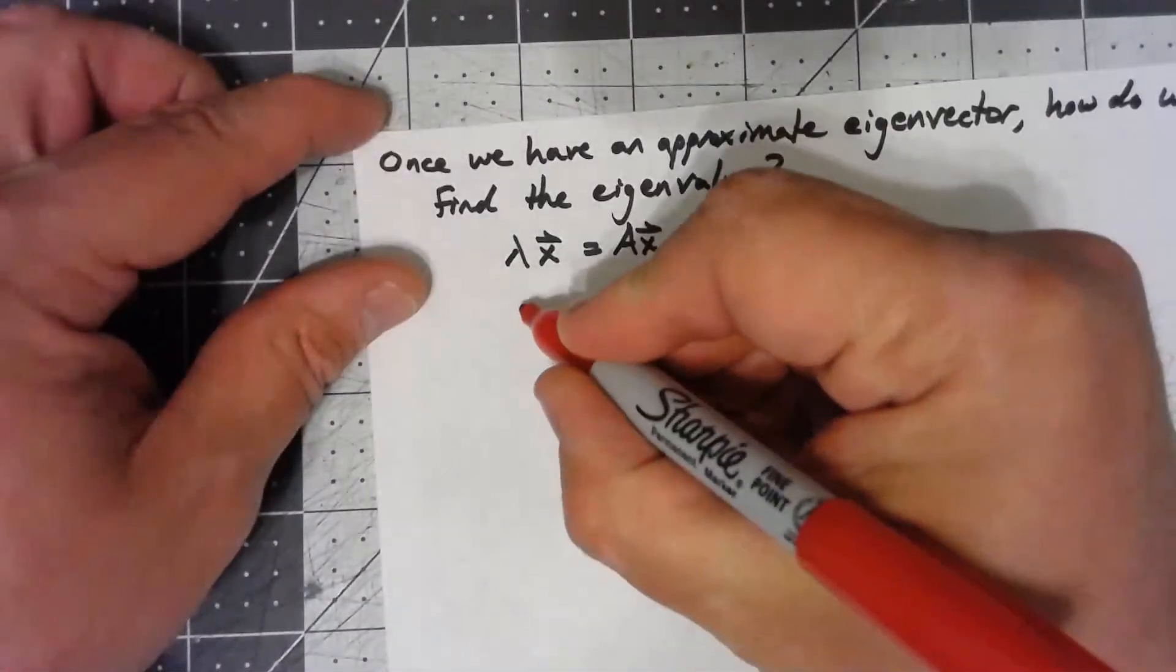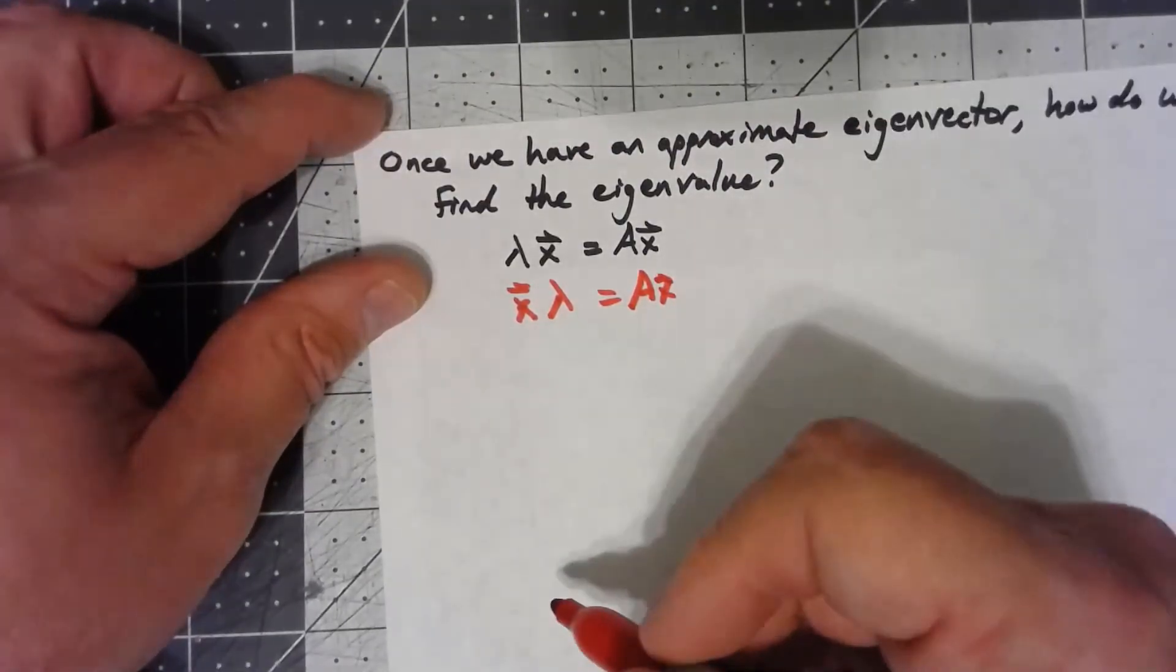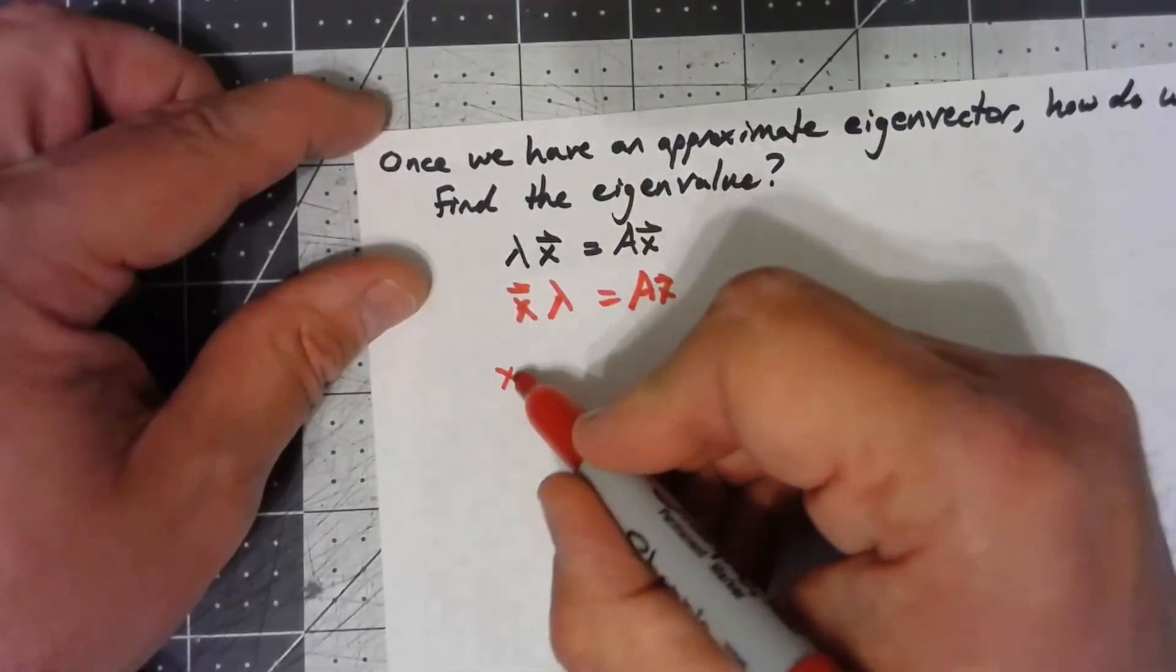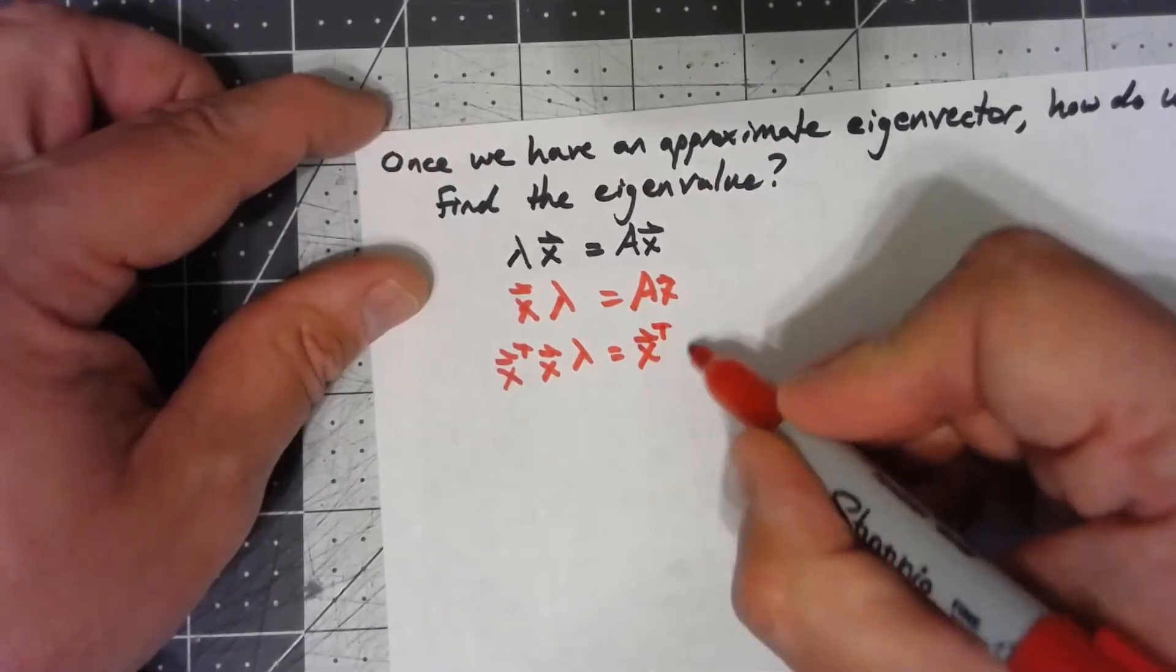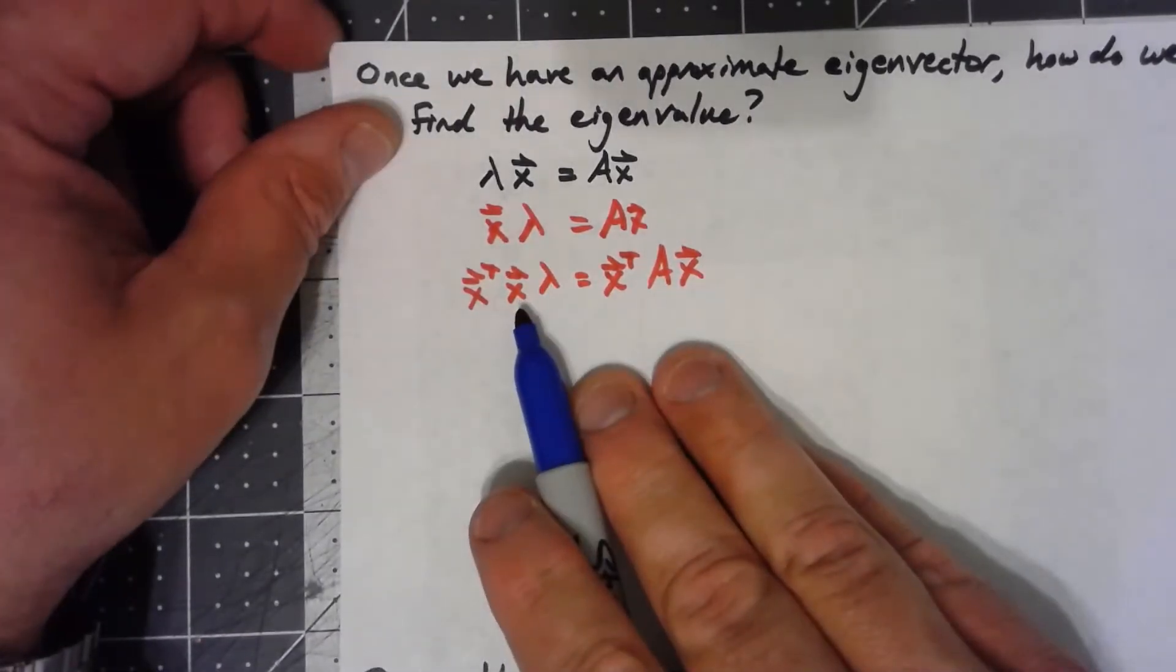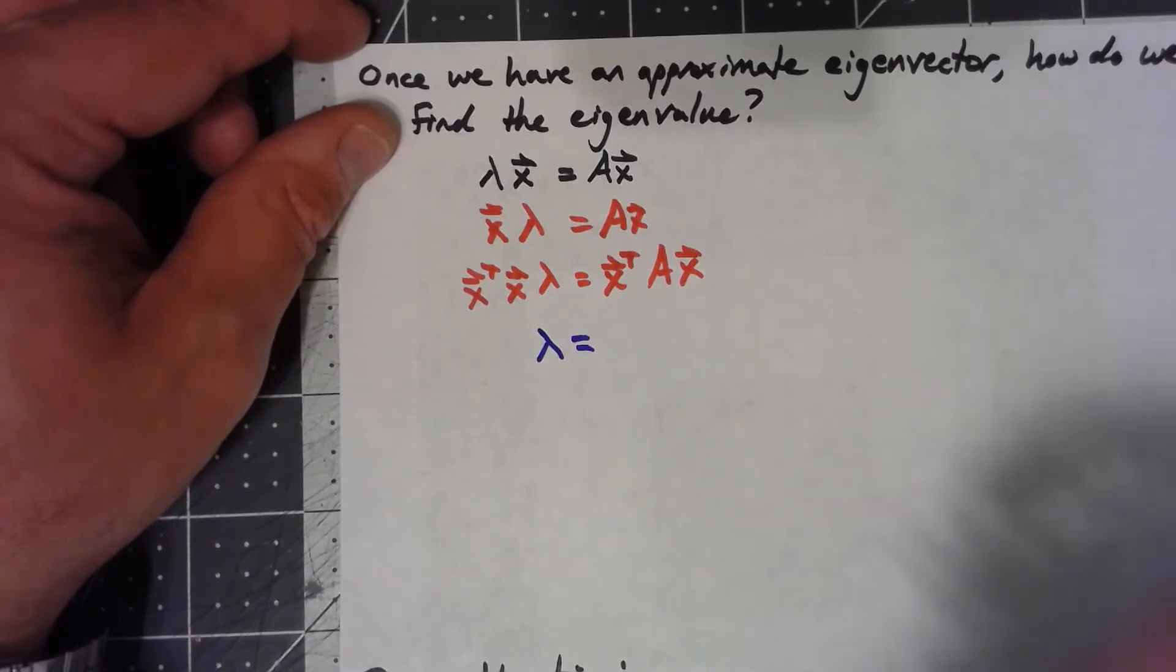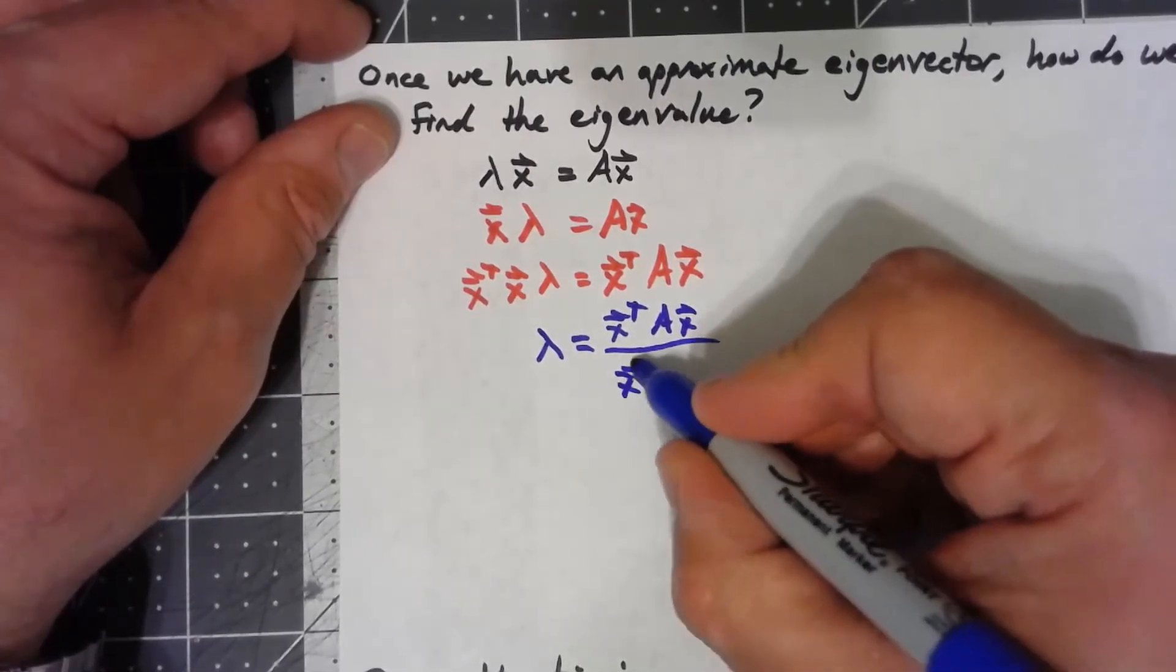And what we learned back then, let's go ahead and rewrite this just slightly. I can write this as x times lambda is Ax. And the way we solved our least squares problems was we said, okay, if I multiply by x transpose, the solution to this was my least squares, the closest thing we could find in a least square sense. But x transpose x is just a constant. So that means my least squares answer, my best approximation for my eigenvalue is x transpose Ax over x transpose x.